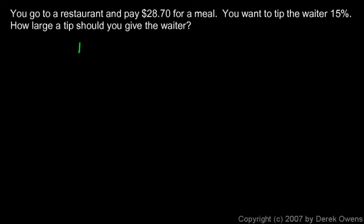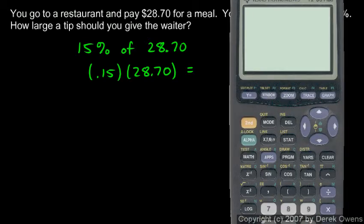Well, it's going to be 15% of $28.70, so 15% of 28.70. That's going to be 0.15 times 28.7. And when you do the math, you take out the calculator here. I'll calculate 0.15 times 28.7, and I get 4.305.